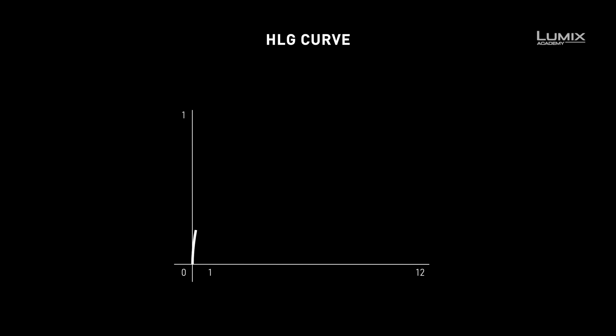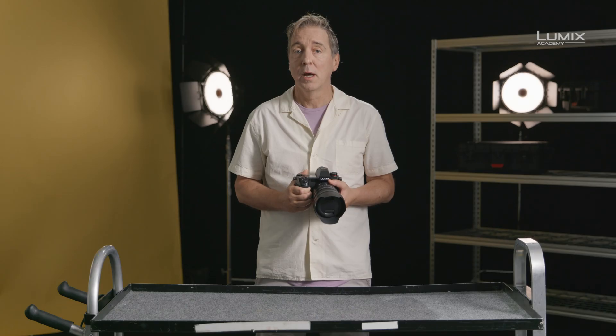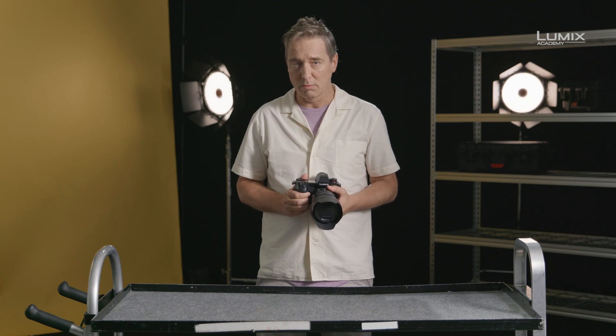The HLG format works around this obstacle by coding both SDR and HDR footage into the same broadcasting signal. When being played back, the HLG signal will display in HDR if your television is compatible with the HLG HDR format, otherwise it displays in regular SDR.